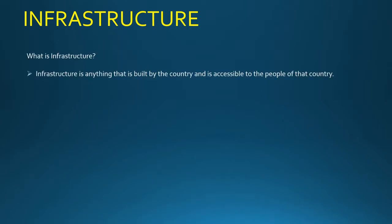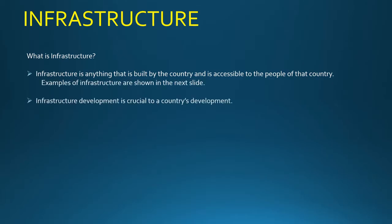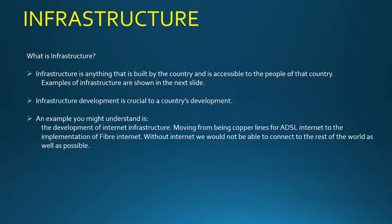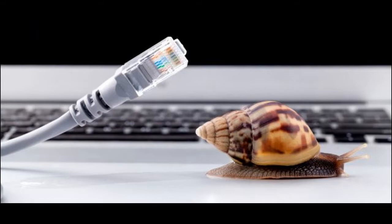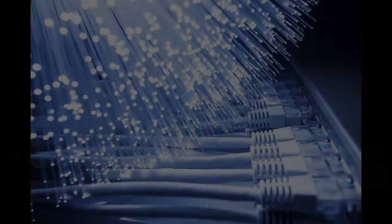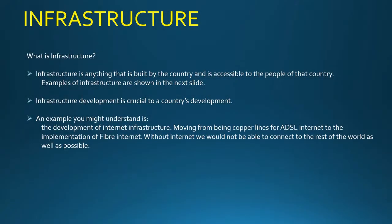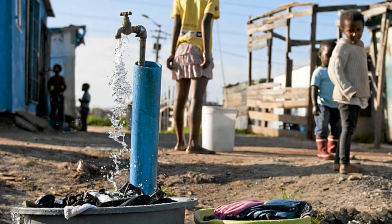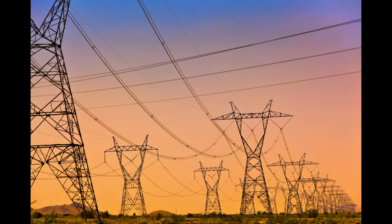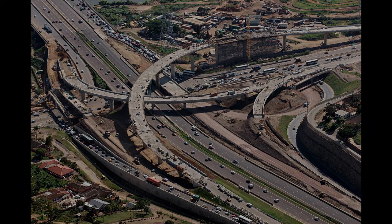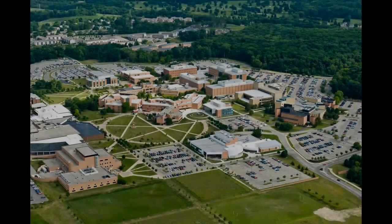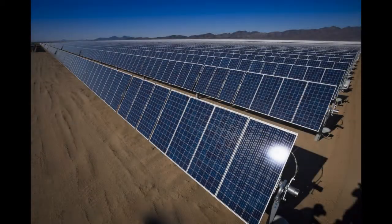Infrastructure refers to the physical structures in a country that help society to operate. To explain why infrastructure is important to development, consider the example of internet infrastructure. Upgrading a country's internet from copper cables to fiber, and from 3G to 4G or 5G, allows people to access far more information much faster and more reliably. This allows businesses to function more efficiently, making more money and employing more people. Examples of infrastructure range from basics like clean water, sewage disposal, and electricity production, to roads, railway lines, and airports, as well as schools and universities, and high-tech infrastructure like advanced internet connection and clean energy production.